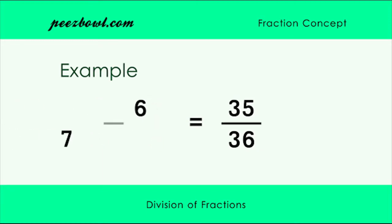Hence the division of two fractions 5 upon 6 and 6 upon 7 is 35 upon 36. Let us take another example.